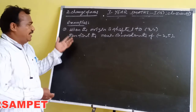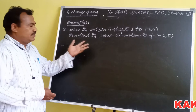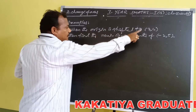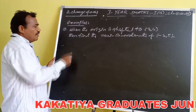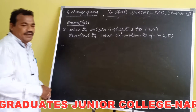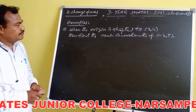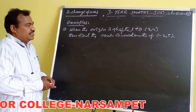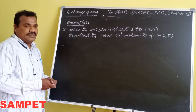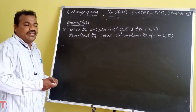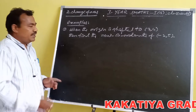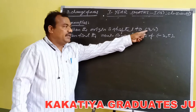Here are some examples of translation of axes. First one: when the origin is shifted to (3, 4), then find the new coordinates of (-2, 5). In this, translation of axes means without changing the direction of the coordinate axes, the origin is shifted to another point. Here, the origin is shifted to the point (3, 4).